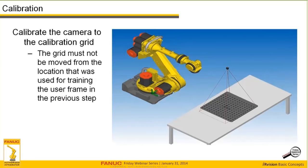Our next step is to calibrate the camera to the calibration grid. One critical point to circle and note: in this type of process, the grid must not be moved from the location used for the training in the previous step. I find it useful on the plant floor to pin and position the calibration grid so you can remove and replace it accurately — this can save you from going through the manual grid frame calibration and touch-up should something happen to the camera or the system.